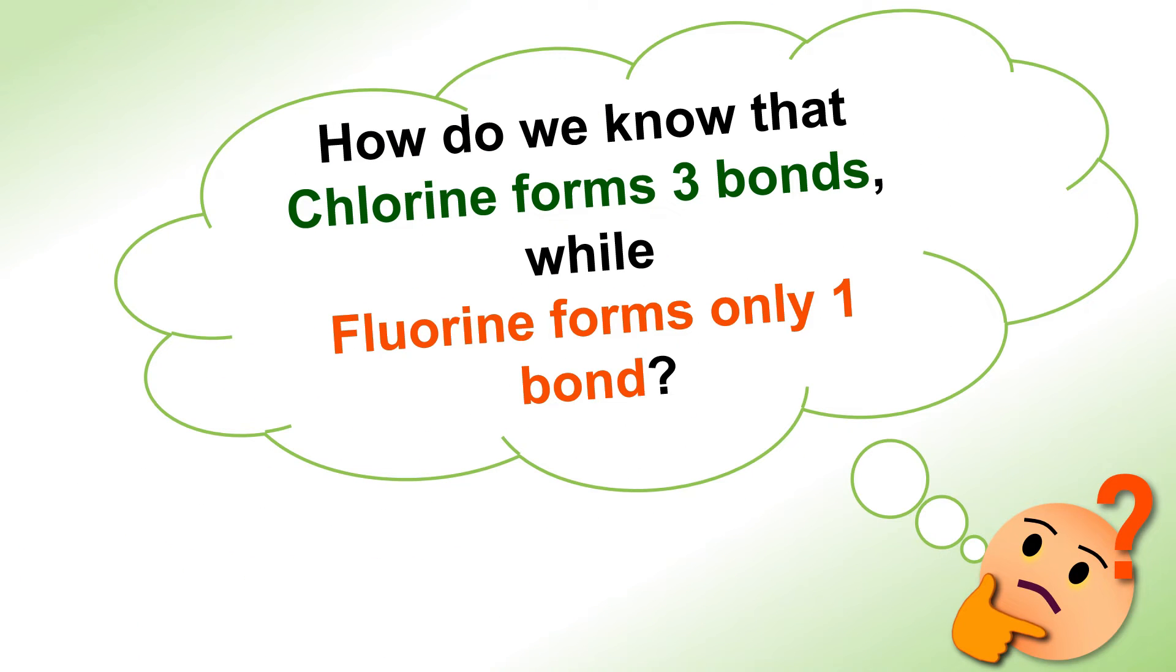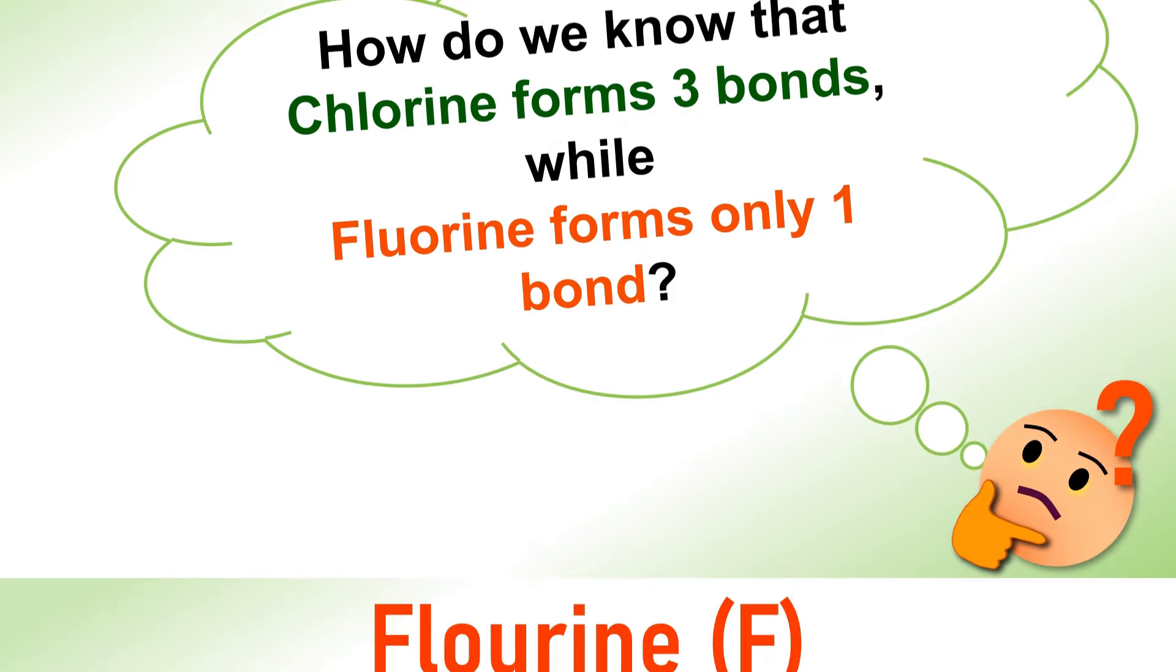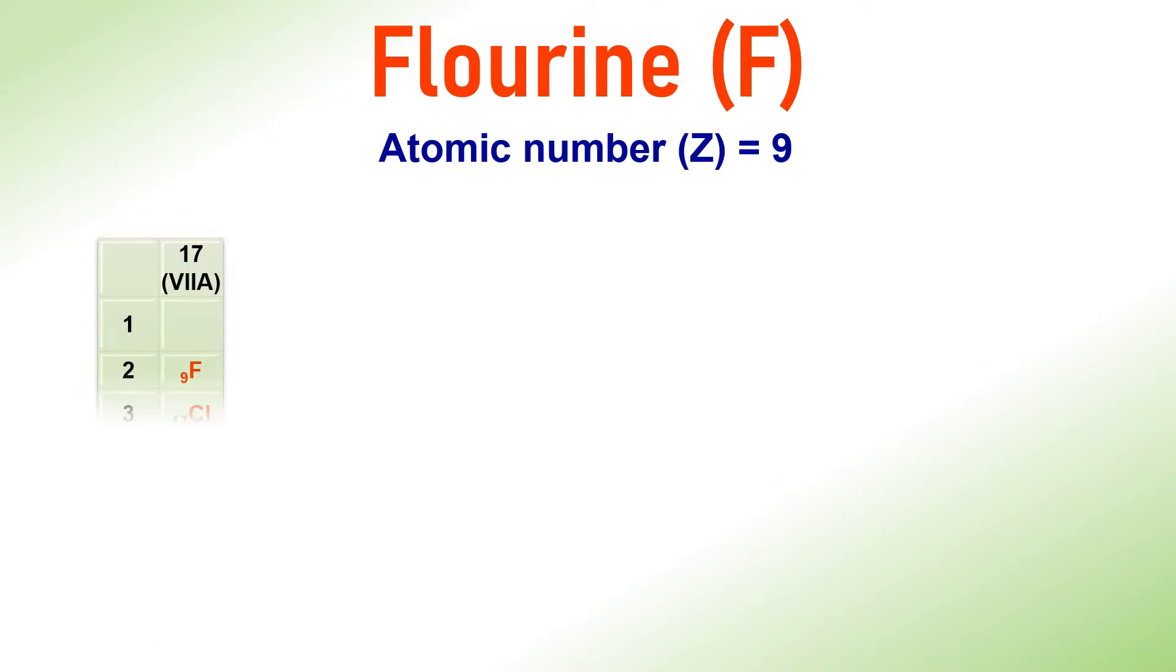Now, you may ask the question, how do we know that Chlorine forms three bonds, while Fluorine forms only one bond? To answer these questions, let us go through a few details about Fluorine and Chlorine atoms.